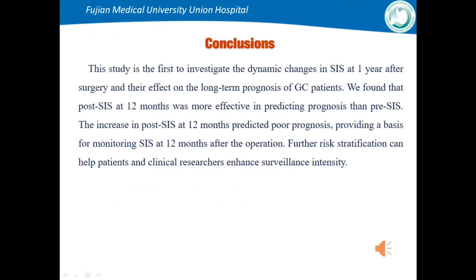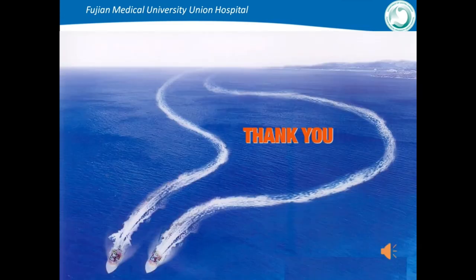The risk groups defined by SIS were independent prognostic factors for overall survival. We found that post-SIS at 12 months was more effective in predicting prognosis than pre-SIS. Increasing post-SIS at 12 months predicted poor prognosis, providing a basis for monitoring SIS at 12 months after operation for risk stratification to help patients and clinicians enhance surveillance. Thank you for your listening.